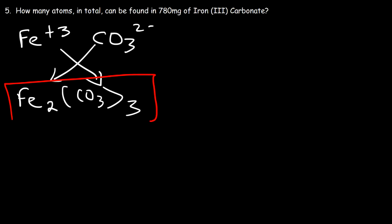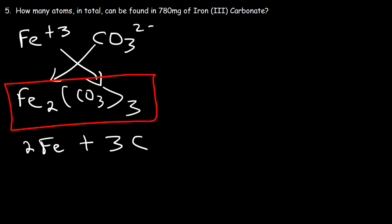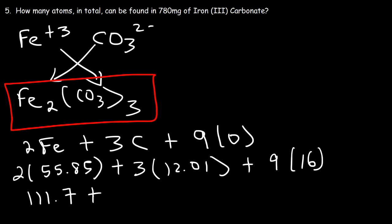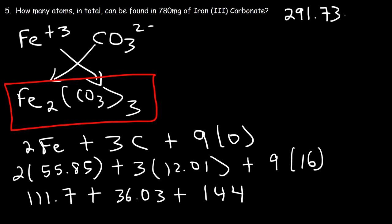Now that we have the formula, we can calculate the molar mass. In this compound there are two Fe atoms, three carbon atoms, and 3 times 3 equals 9 oxygen atoms. Fe is 55.85, carbon has an atomic mass of 12.01, and oxygen is always 16. Two times 55.85 is 111.7, three times 12.01 is 36.03, and nine times 16 is 144. Adding those together gives a molar mass of 291.73 grams per mole.